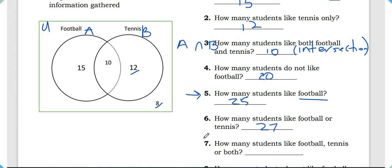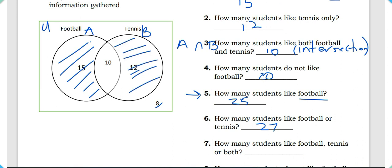Question seven: how many students like football, tennis, or both? This is asking for the total of students who like football, students who like tennis, or students who like both sporting events. So the answer is 15 plus 10 plus 12: 15 plus 10 is 25, plus 12 is 37.